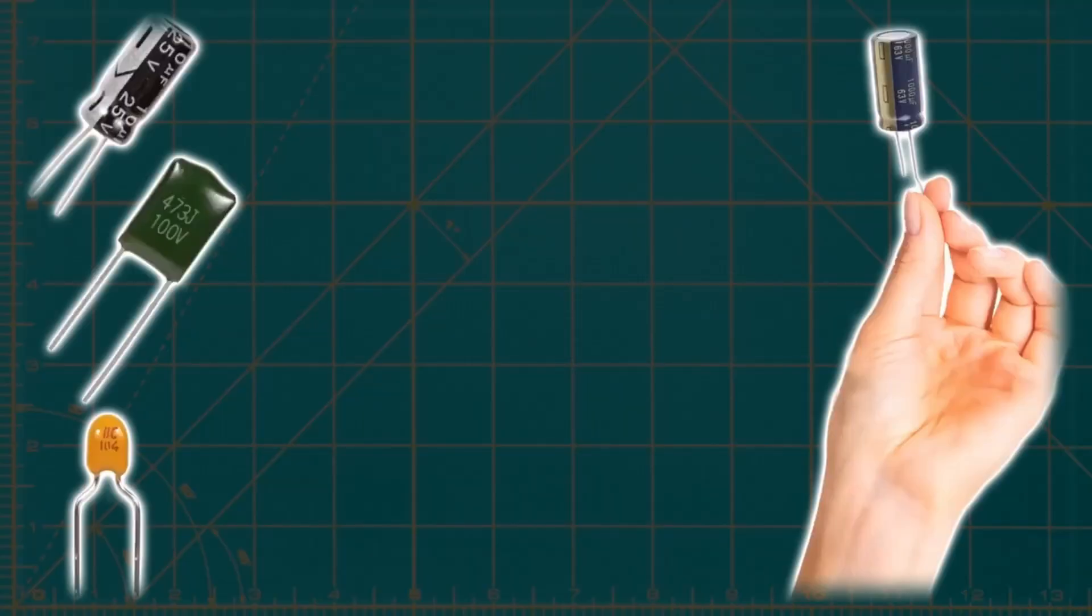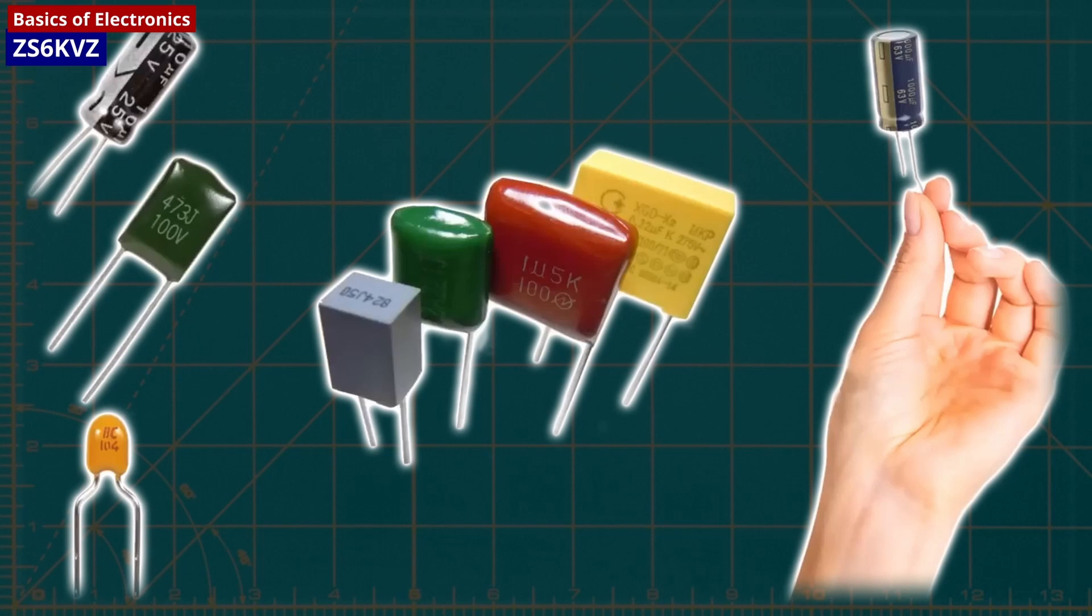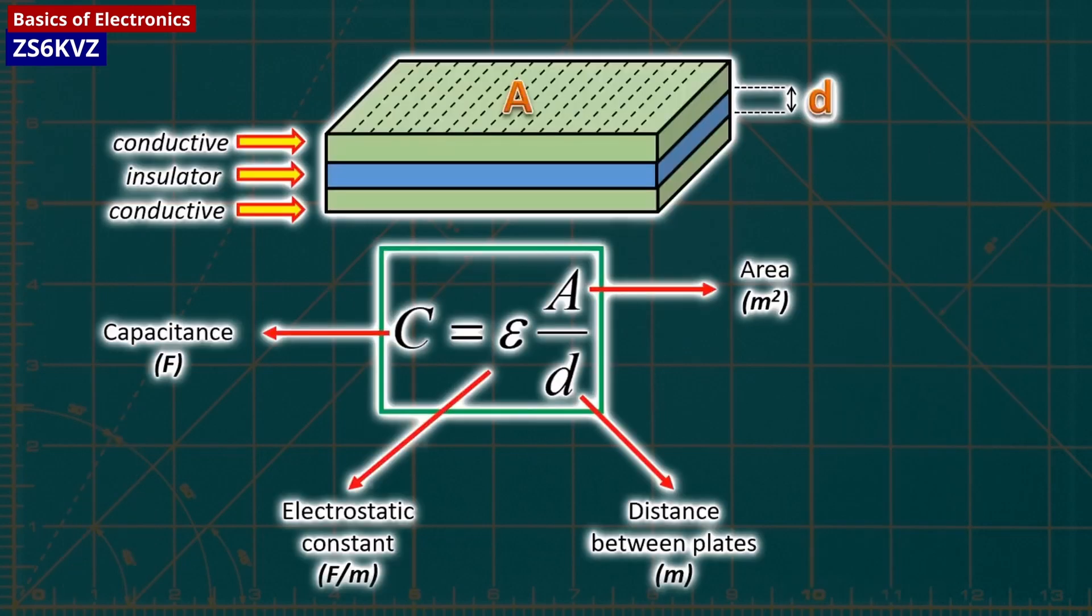A capacitor is an electrical component used to store and discharge electricity into a circuit when there is a drop in electrical energy. It can be compared to a water storage tank that releases water during a drought to ensure a steady flow.